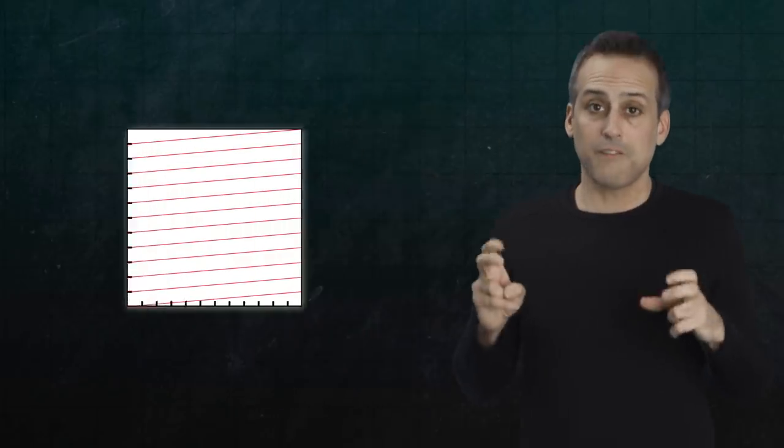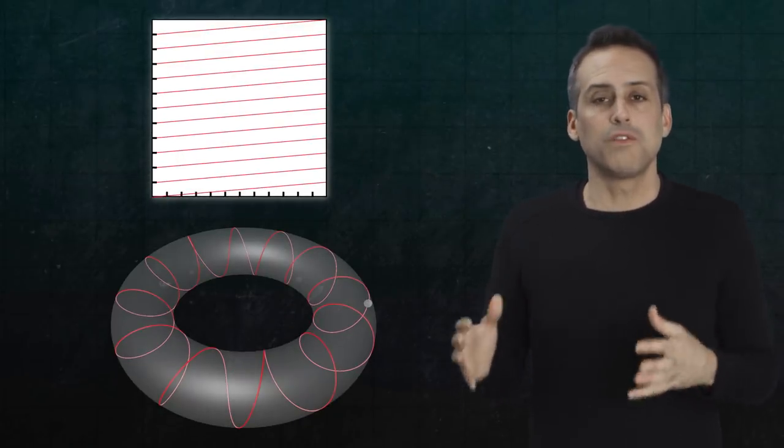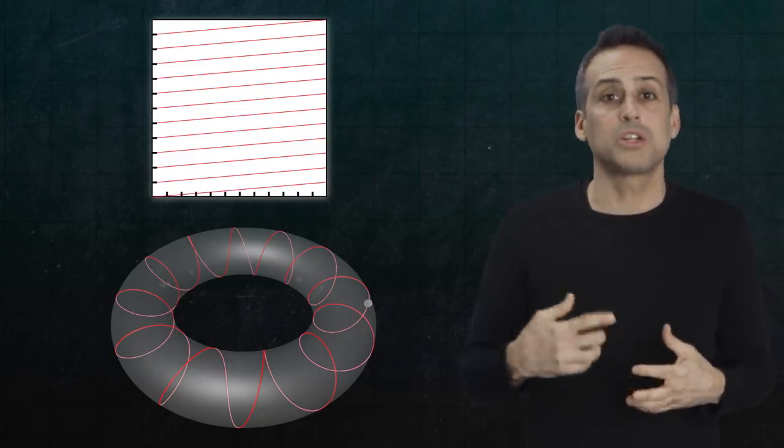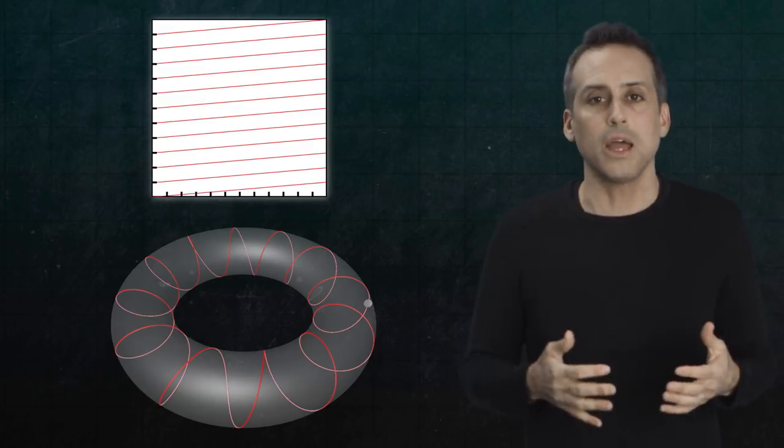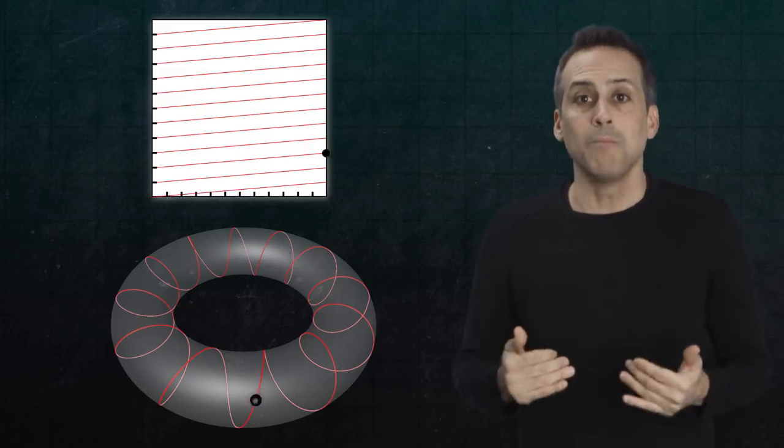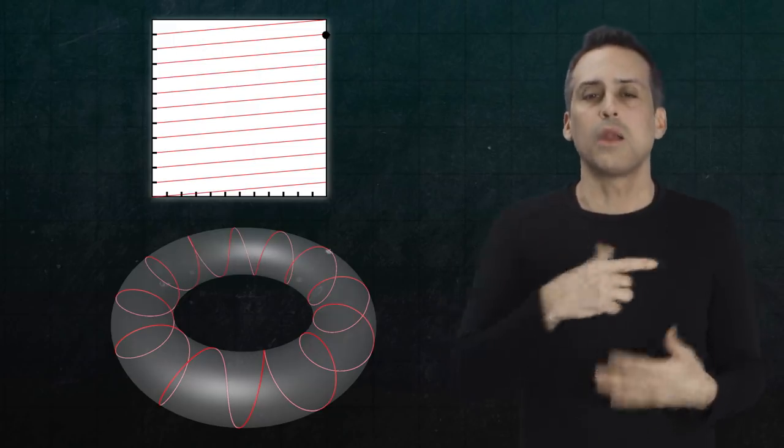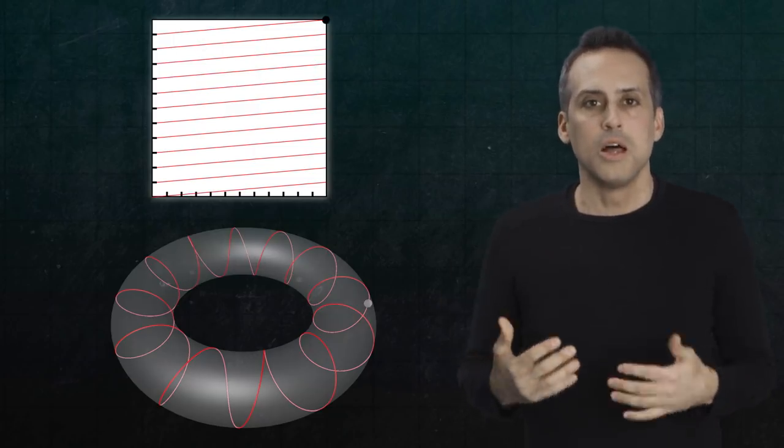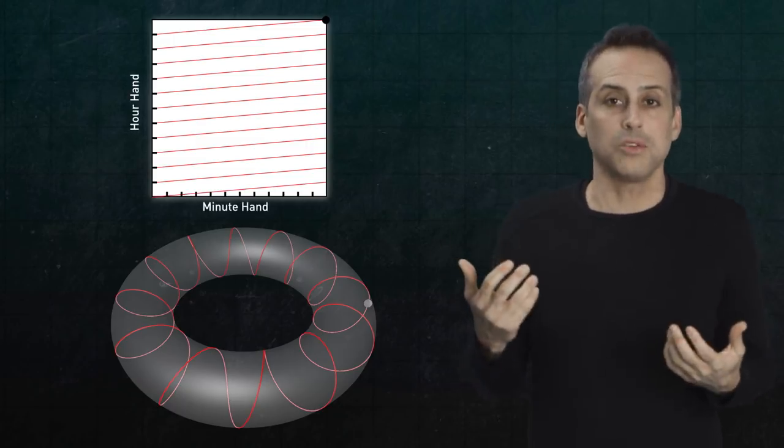But let's get back to the clock puzzle. If you buy my arguments so far, then the points on the Pac-Manified square, just like points on the torus, should represent all possible configurations of the clock. And the winding helix, which captured just the valid configurations that actually occur during times of day, would correspond to a line that climbs up the square by repeatedly exiting through one side and reentering on the opposite side. So just call the bottom edge the minute hand axis and the left edge the hour hand axis.